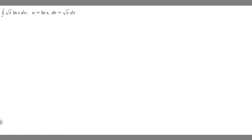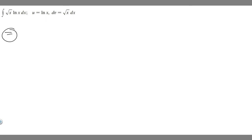In this problem, we're told to evaluate the following integral using integration by parts. We're going to be taking the integral of the square root of x times the ln of x dx, where u equals ln of x and dv equals the square root of x dx. The formula for integration by parts is u times v minus the integral of v times du.